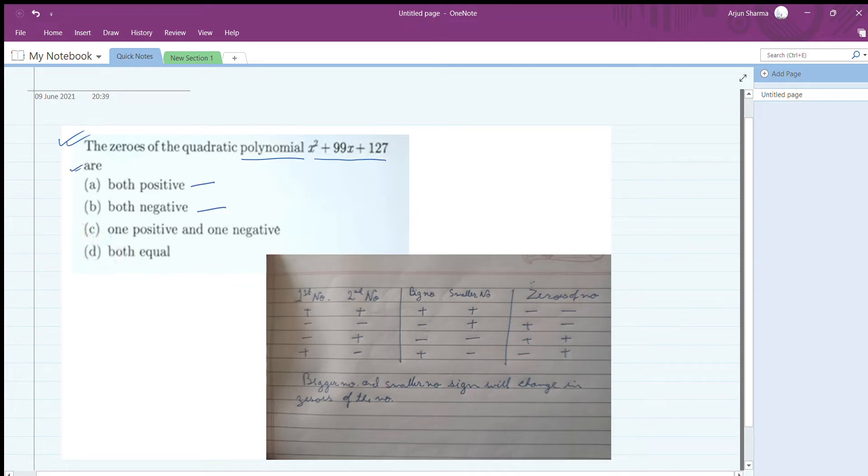Both positive, both negative, one positive and one negative, or both equal. These are the options A, B, C, and D. So first let me show you which option is correct - A, B, or C.